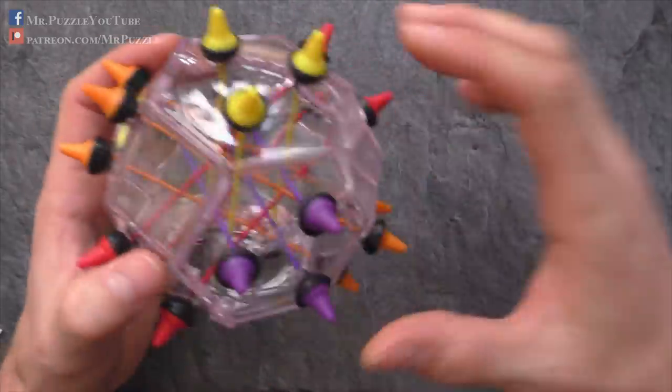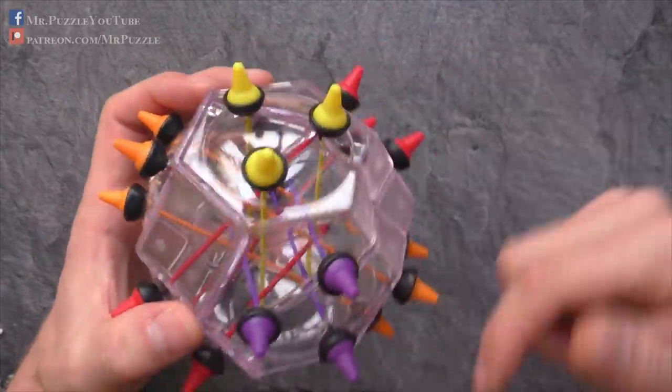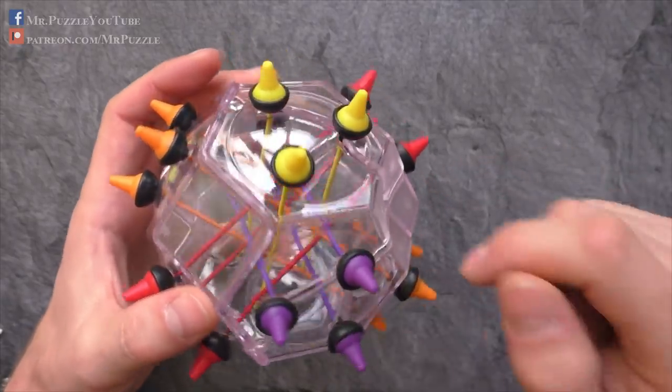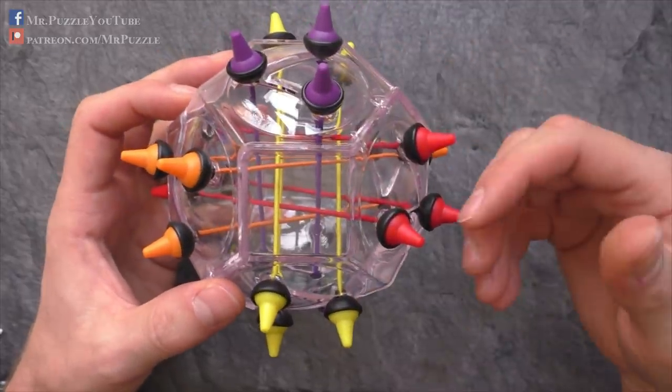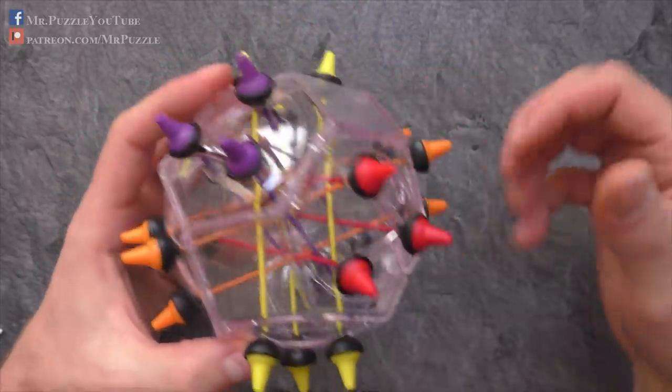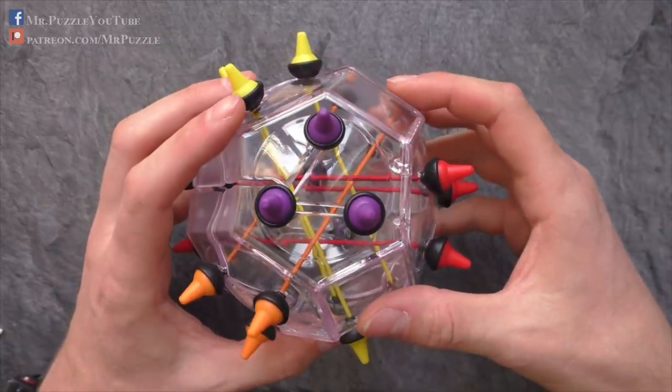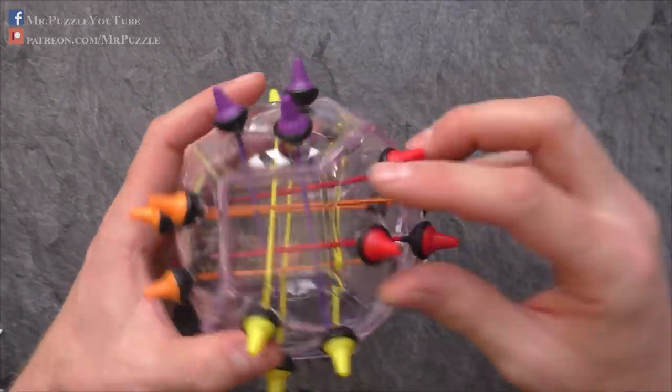You can mix these all around and create a knot inside the sphere. Then you need to disentangle it again to get back to the initial condition. I'll shuffle it now in fast forward.